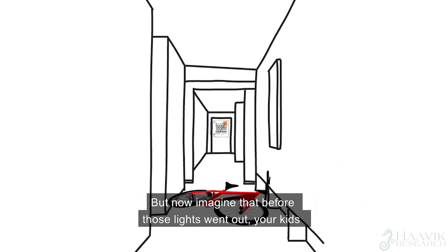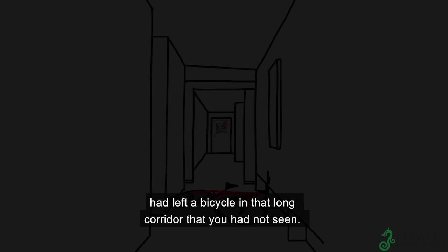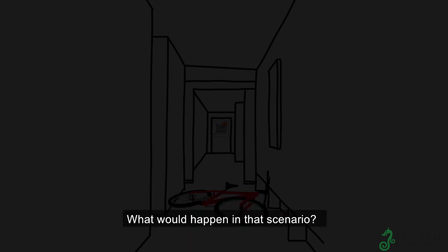But now imagine that before those lights went out, your kids had left a bicycle in that long corridor that you had not seen. What would happen in that scenario? You would likely fall and hurt yourself.